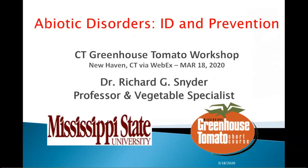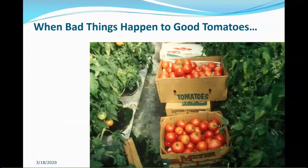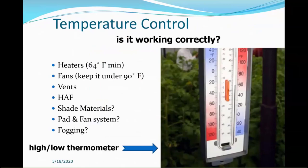Abiotic disorders — or what I like to call this talk — is 'when bad things happen to good tomatoes.' Sometimes it feels like you're doing everything right, getting a good crop and good yield. Once in a while something goes wrong, and I'm going to show you things that can go wrong. This doesn't mean they will all happen. You may just get one or two, then consult your extension people, figure out what it is, and solve the problem.